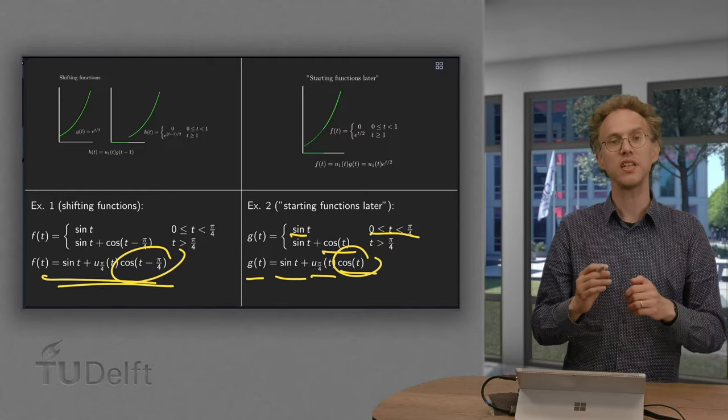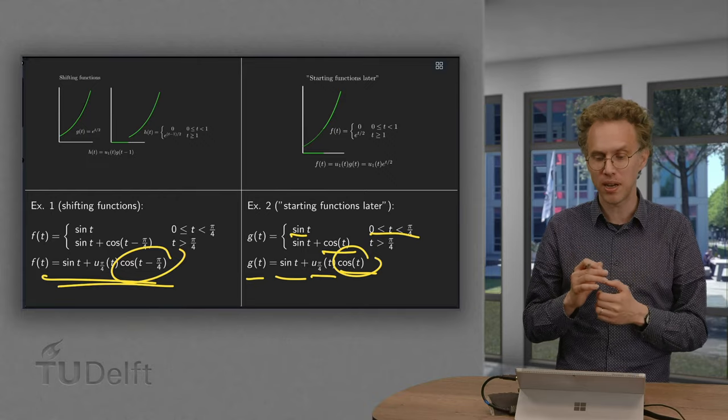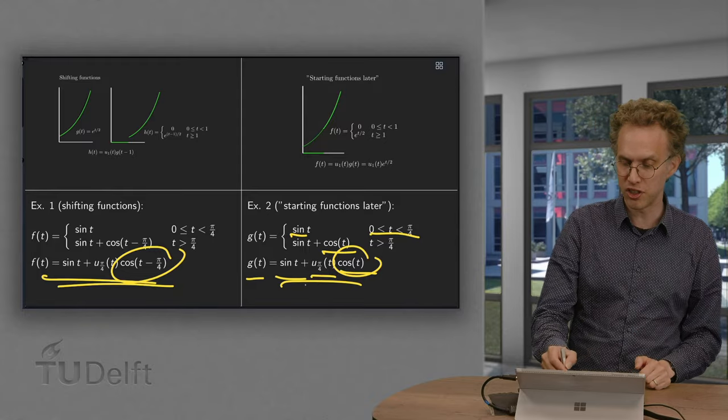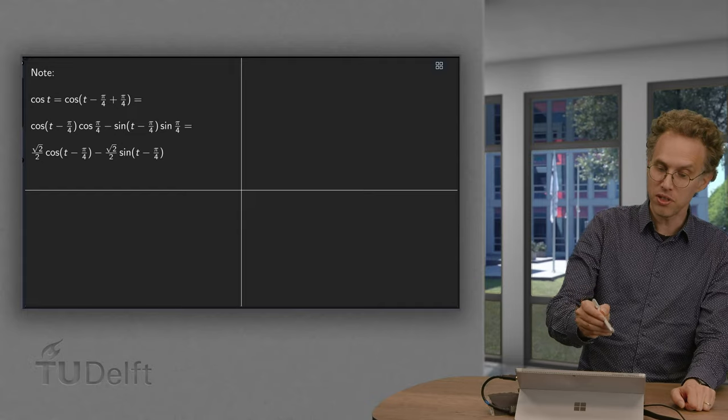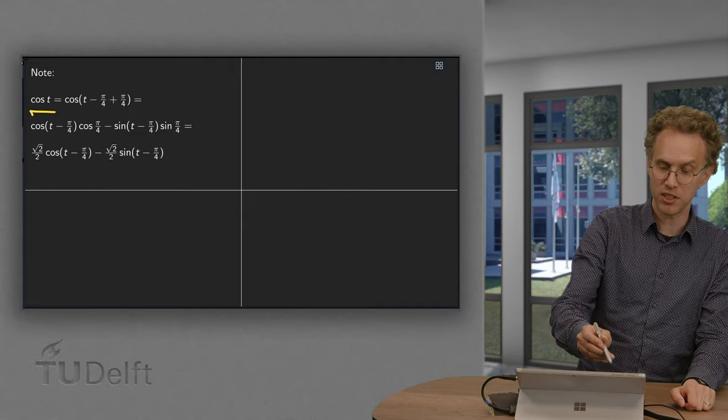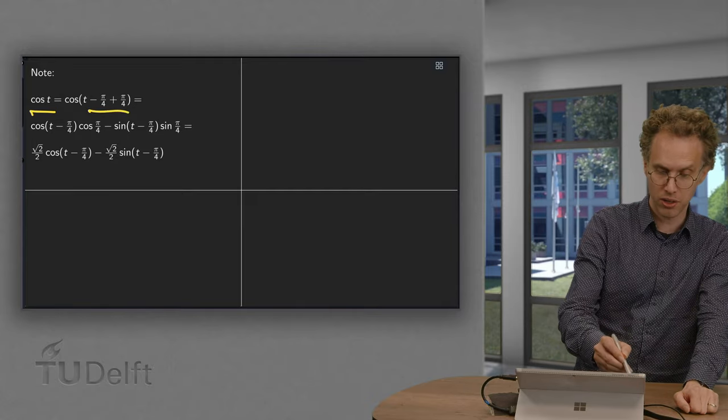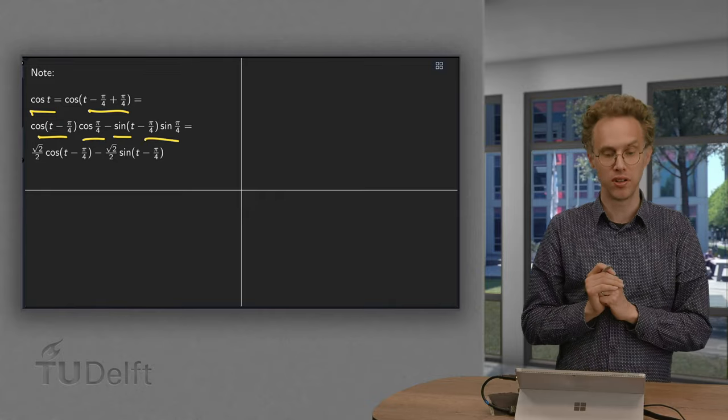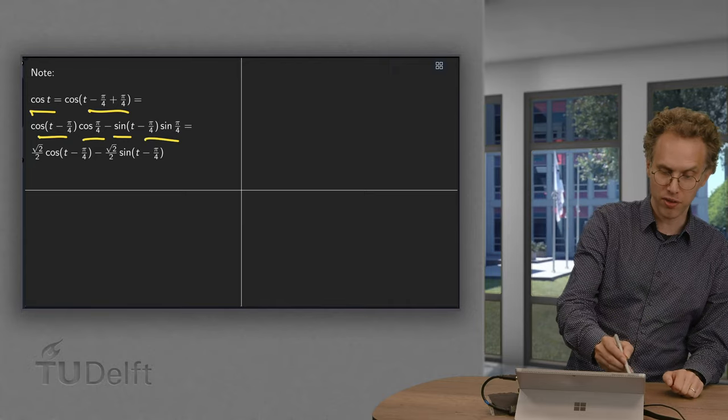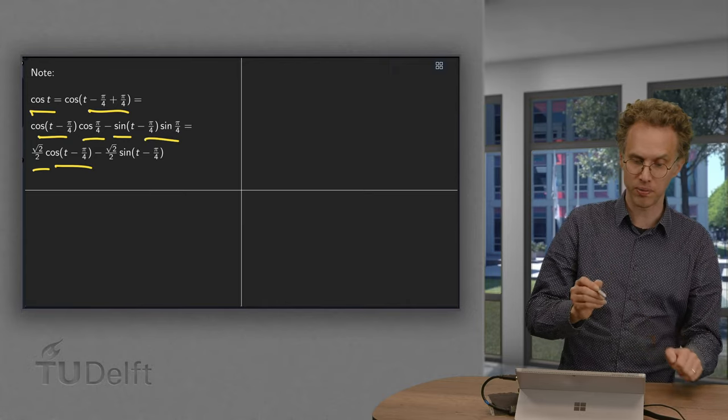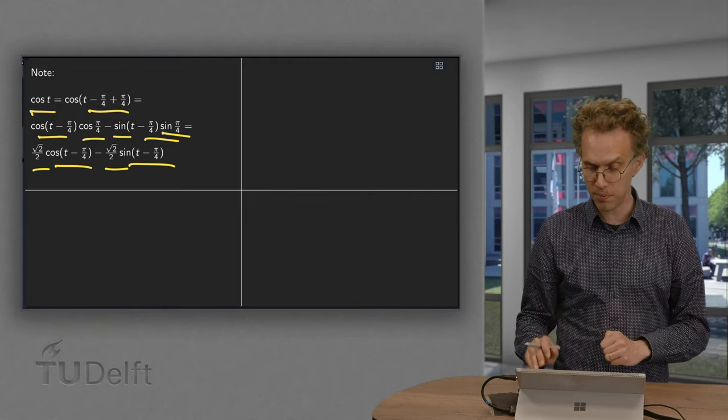This first type of function is more useful for us in the Laplace transform context, and sometimes we can rewrite the second functions in terms of the first ones. Let's do that as an example for the second example. Note that we have cosine of t. We can rewrite this because cosine of t equals cosine of (t - π/4 + π/4). That's cosine cosine minus sine sine, the trigonometric formulas. So the cosine of π/4 equals (1/2)√2 times cosine(t - π/4). Sine π/4 is also (1/2)√2, so here we have sine of t minus π/4.